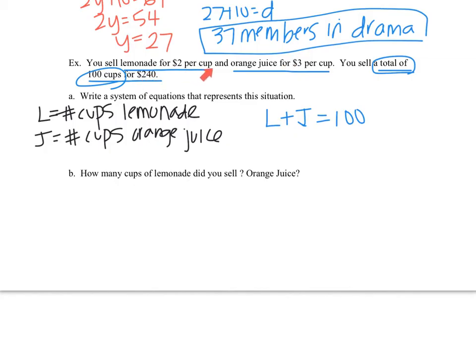So if it's $2 for a cup of lemonade, remember per was one of our slope words. So $2 is kind of representing the slope of the lemonade, right? Because each time I sell a cup, it costs $2. So it goes 2, 4, 6, 8, right, for each number of cup. So my first part of the equation is going to be 2L, because it's $2 per cup of lemonade. And then the other one is going to be 3J because it's $3 per cup of orange juice.